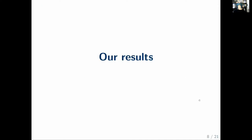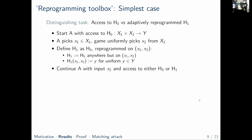Now we'll move on to the results. Our results are a reprogramming toolbox, and I'll first present the simplest case. We consider distinguishers with the task of distinguishing between access to a plain random oracle H0 and its adaptively reprogrammed counterpart H1. The random oracle is defined on the product of a finite set X1 and a finite set X2 — just imagine a bit string of length 2l, where X1 is the first half and X2 is the second half.